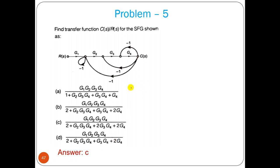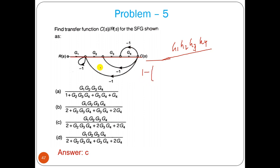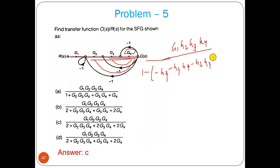This is another GATE problem. The forward path gain is G1*G2*G3*G4. The loops are: L1 = −G4, L2 = −G3*G4, L3 = −G2*G3*G4, and there is a self-loop L4 = −1. L1 is non-touching with the self-loop L4, and L2 is also non-touching with L4.